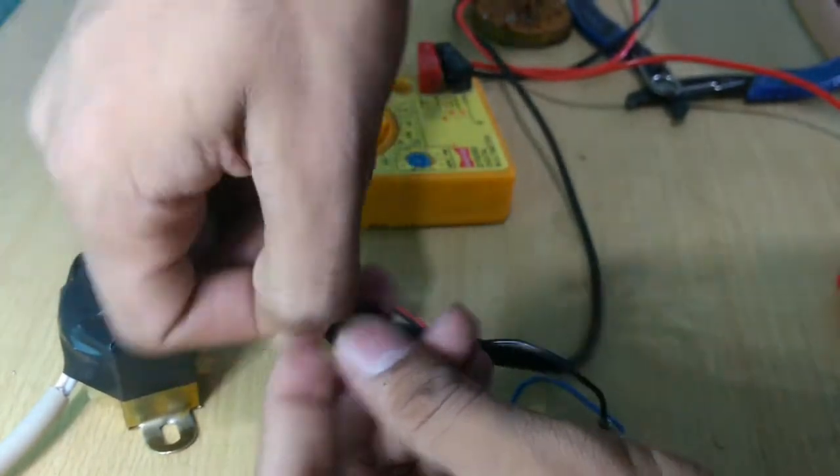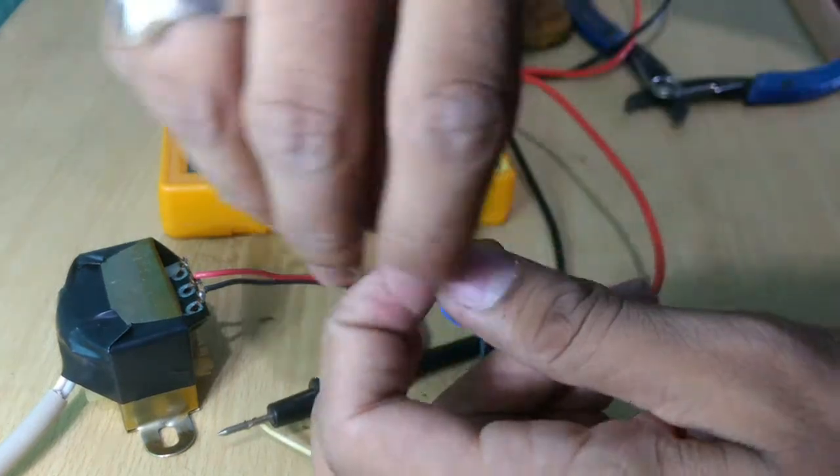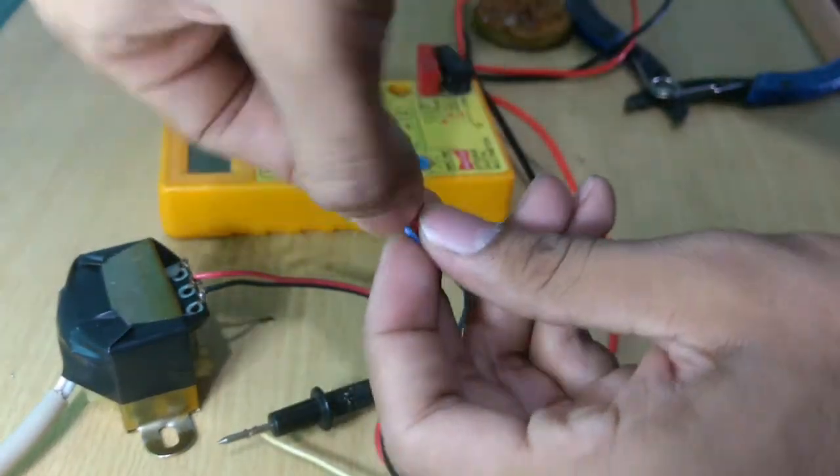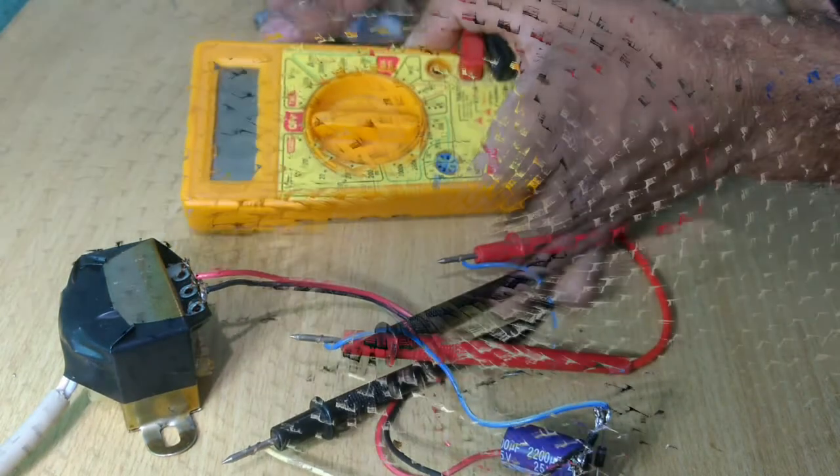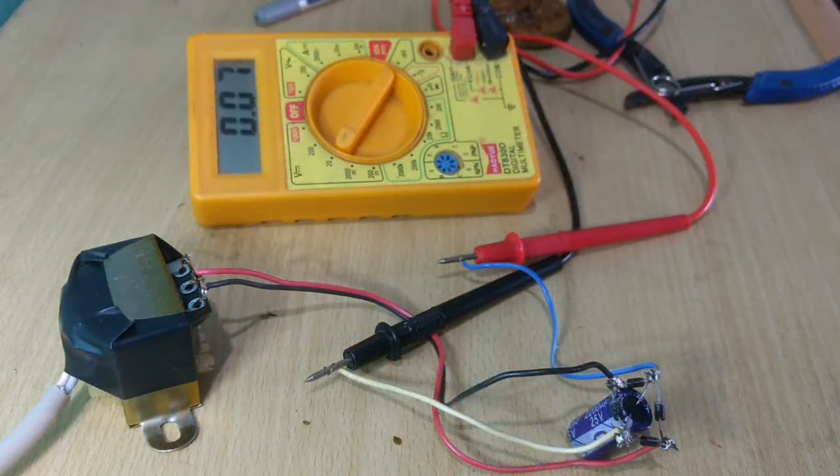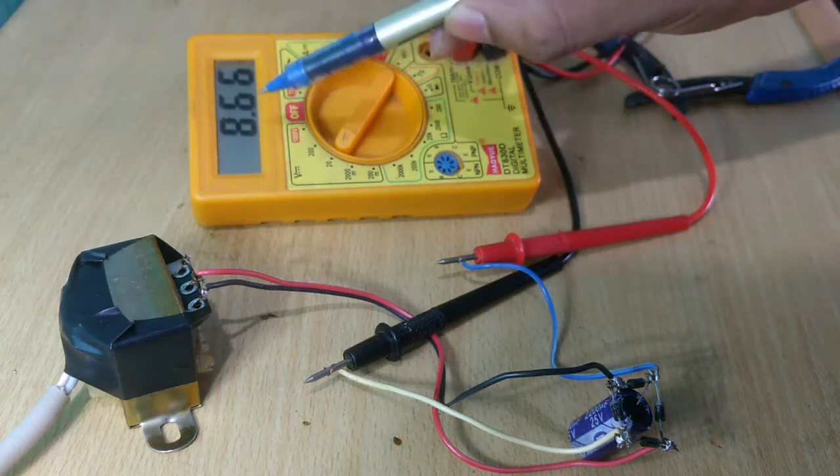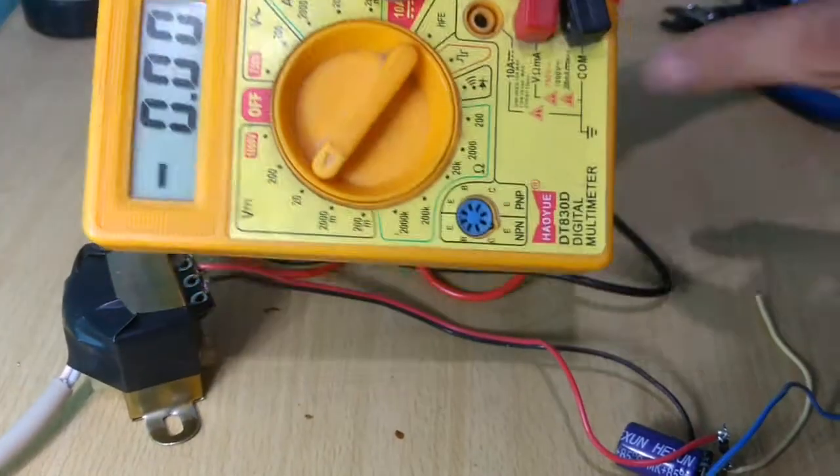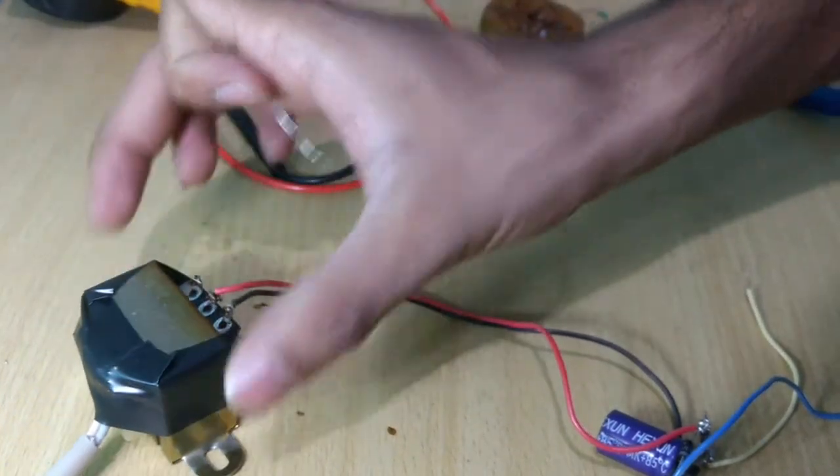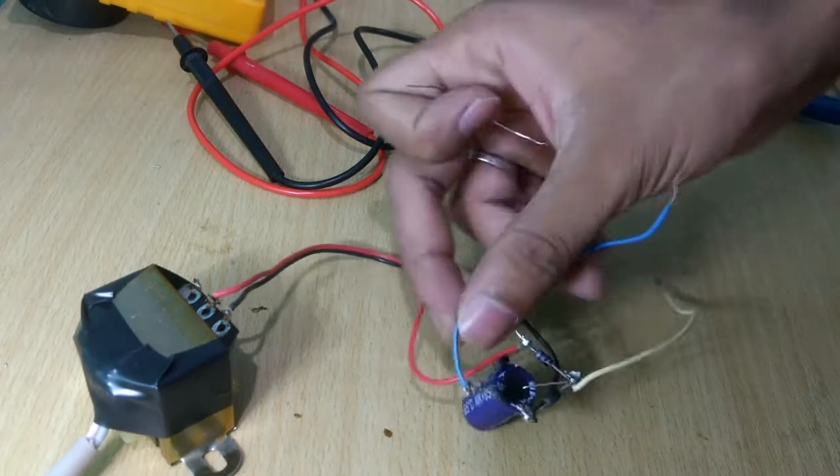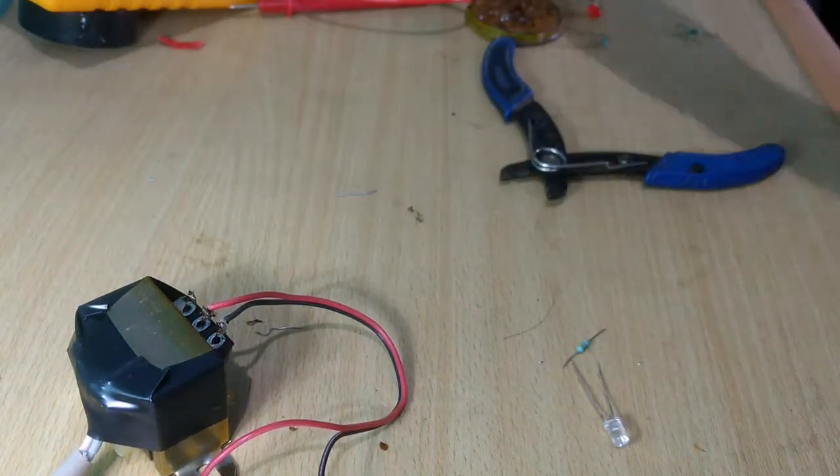So now connect the output sources, DC output sources to a multimeter and then switch on the AC source. And let us check the output voltage on the multimeter. So in the multimeter we can see that the output voltage is 8.53 volts DC. Considering the local make of the multimeter and the transformers, this kind of error can be ignored.